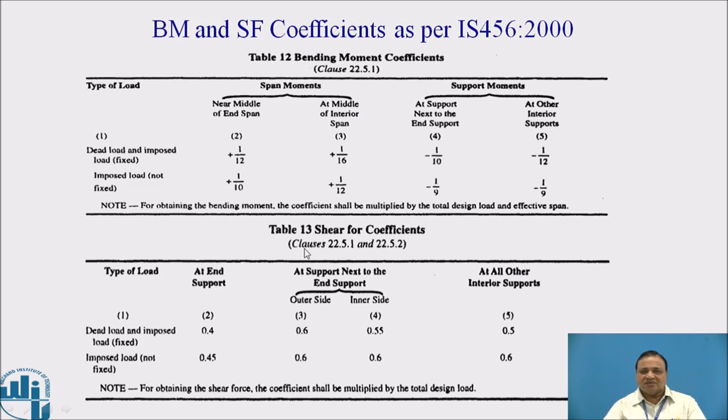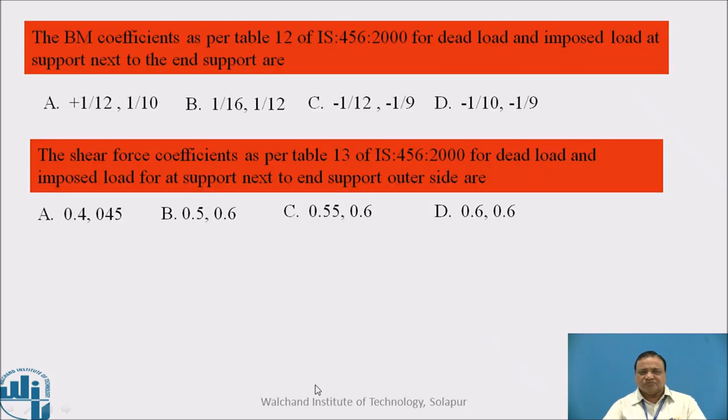This is table number 12 and table number 13 for the shear force coefficients. Here we get coefficients for dead load and live load for different conditions. These are span moments and support moments. Can you guess what are the bending moment coefficients as per table number 12 of IS 456:2000 for dead load and imposed load to get highest span moment, and for highest shear force?